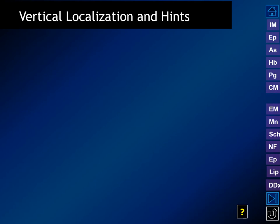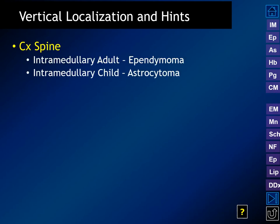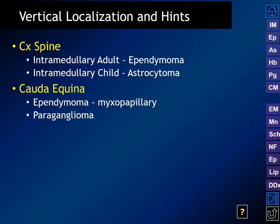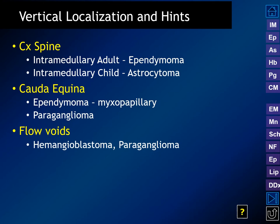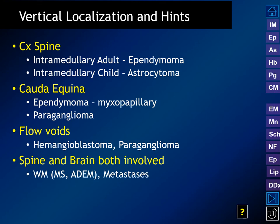Vertical localization provides helpful hints. In the cervical spinal cord, intramedullary lesions in adults are usually ependymoma, whereas in children they're astrocytic. Down in the cauda equina, we have the myxopapillary flavor of ependymomas and paragangliomas. Flow voids may suggest hypervascular lesions like hemangioblastoma and paragangliomas. If both spine and brain are involved, think about primary demyelinating diseases like multiple sclerosis and ADEM, as well as metastatic disease.